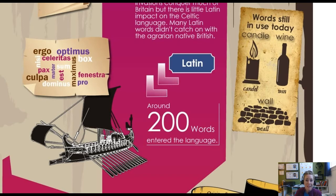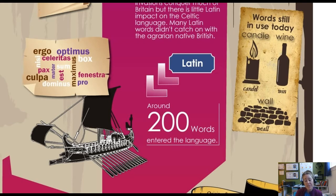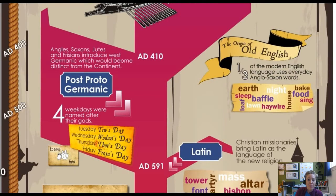Around 410 AD the Roman Empire was crumbling, so they left England and took their soldiers and forces with them. This left the land very susceptible to invasion — the ruling group was gone and there was no army. At this point another group of tribes invaded: the Angles, Saxons, Jutes, and Frisians.